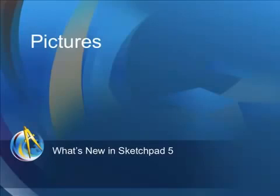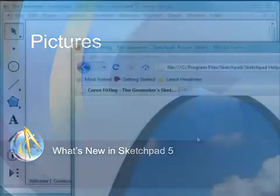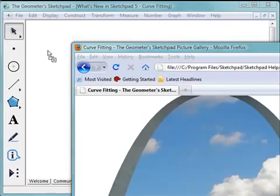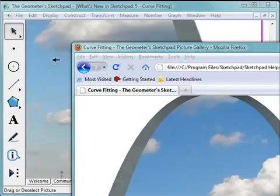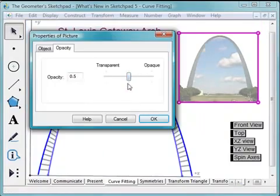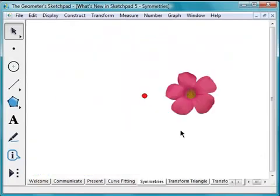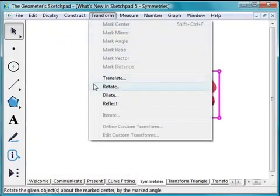Sketchpad 5 makes it easy to work with photographs and drawings. You can drag and drop pictures from your camera or web browser into Sketchpad, and then get to work. You can set up pictures as transparent backdrops and then do math on top of them. Or, you can actually do math with pictures to explore symmetries and transformations.